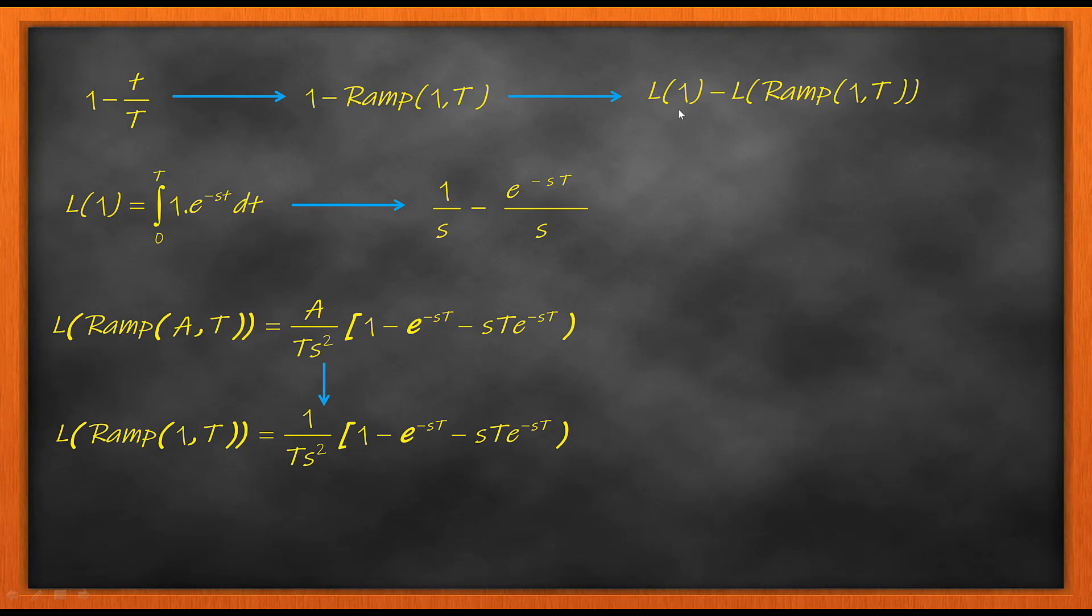Or Laplace of 1 minus Laplace of ramp(1,T). The Laplace of 1 is computed using the Laplace transform formula valid from 0 to T: integral of 1 × e^(-st). Solving you get this.